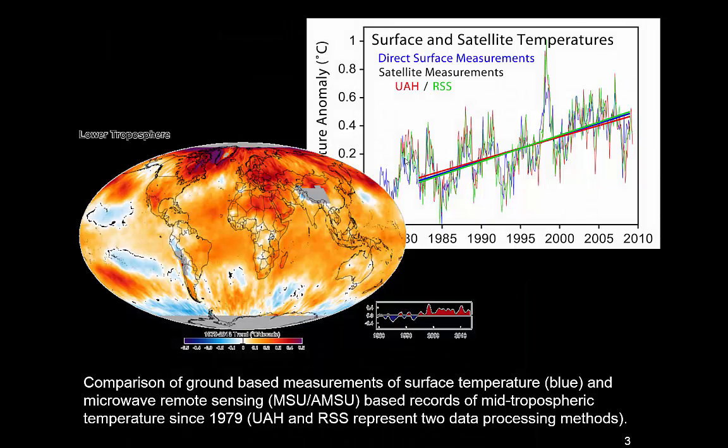You may have seen reports or documents that use a combination of ground station measurements of temperature changes and compare or extend those with satellite measurements. That's quite doable because we can measure the temperature of the surface and also the temperature of the atmosphere reasonably well with remote sensing, as we've seen in another video, for instance using atmospheric sounding.